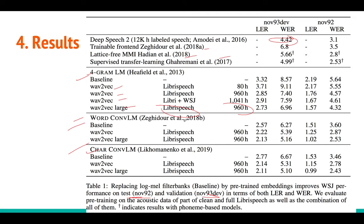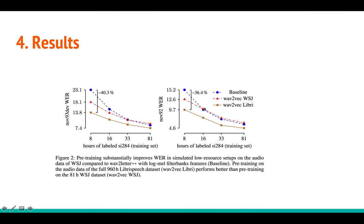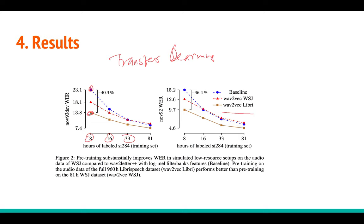There is one more very nice experiment showing transfer learning and even domain adaptation for speech recognition. If you have only 8 hours of labeled data and train the baseline model — just using log mel filterbank energy with wave2letter — you get 23% WER. But if you do wave2vec pre-training with LibriSpeech data and then train the model, you get around 13% WER, which is almost 10% absolute improvement in WER.